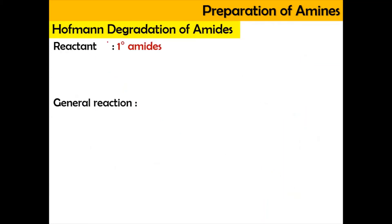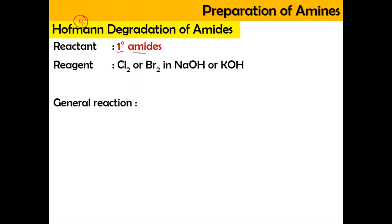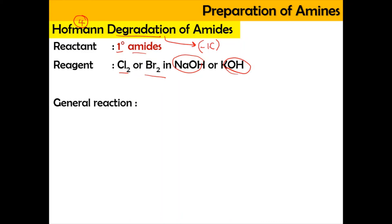Now we go into the last preparation, which is using the Hofmann degradation of amide. The reactant needed is a primary amide. The reagents are chlorine or bromine in either sodium hydroxide or potassium hydroxide solution. Hofmann degradation means a decrease — there will be a reduction (elimination) of one carbon from the chain, making it shorter.